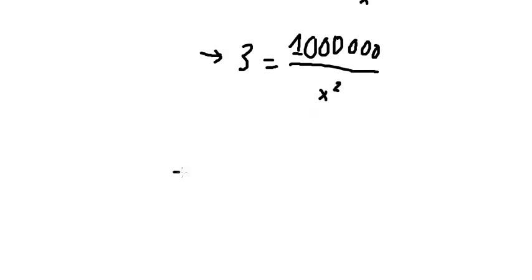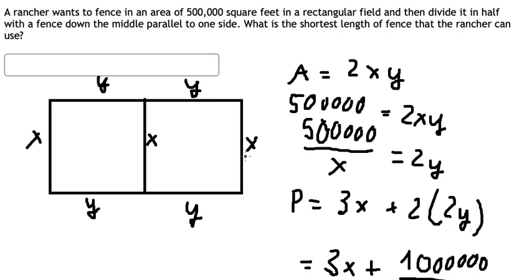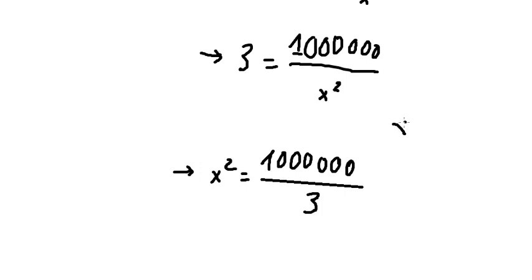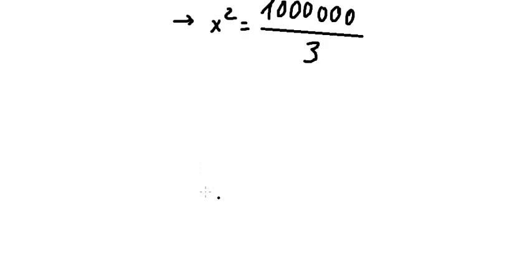So we put number three to the right and x squared to the left. Because this is about the side, we need to select the positive number, so we put the square root for both sides and we got x equals the square root of 1 million divided by number three.